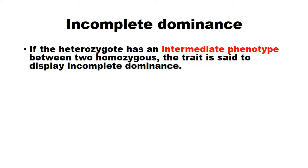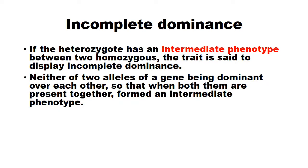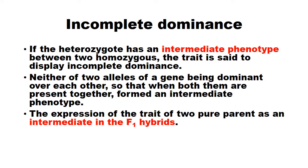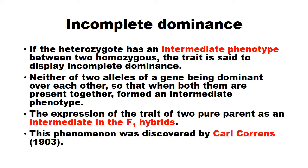What is incomplete dominance? If the heterozygote has an intermediate phenotype between two homozygous, then the trait is said to display incomplete dominance. In this condition, neither of the two alleles of a gene is dominant over the other, so that when both are present together they form an intermediate phenotype. The expression of the trait of two pure parents appears as an intermediate in the F1 hybrid. This phenomenon was discovered by Karl Correns, who is one of the rediscoverers of Mendel's principles.